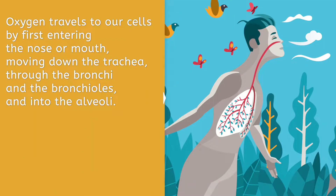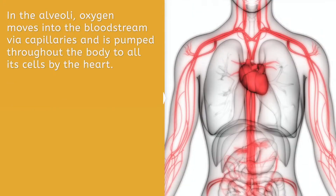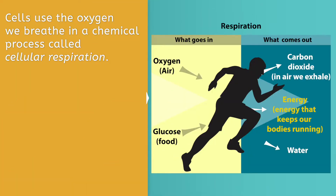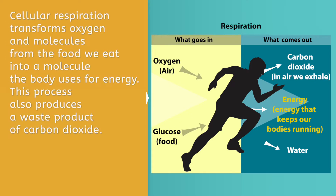Oxygen travels to our cells by first entering the nose or mouth, moving down the trachea, through the bronchi and the bronchioles, and into the alveoli. In the alveoli, oxygen moves into the bloodstream via capillaries, and is pumped throughout the body to all its cells by the heart. Cells use the oxygen we breathe in through a chemical process called cellular respiration. Cellular respiration transforms oxygen and molecules from the food we eat into a molecule the body uses for energy, and also produces carbon dioxide as a waste product.